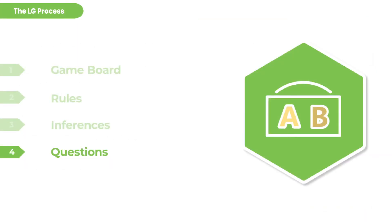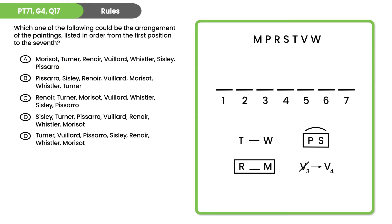So this is a rules question, and rules questions are best attempted by taking the rules one at a time and ruling out the wrong answers. Rather than going answer choice by answer choice and comparing each against all the rules, it's better to take the first rule and apply it to all the answer choices, then the second rule and apply it to all the answer choices. It minimizes the amount of time your eyes have to travel as you're testing the hypotheticals.